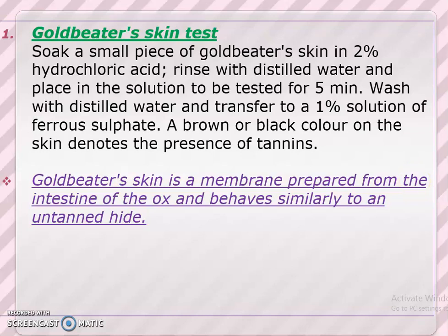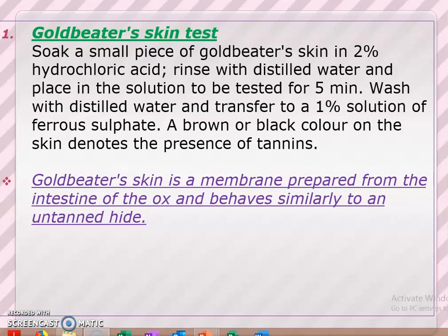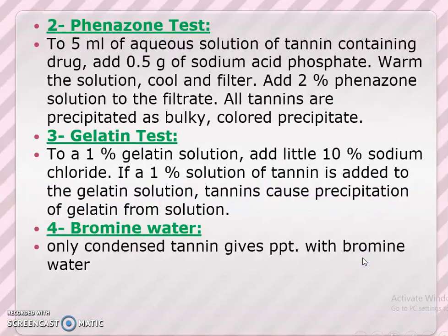Chemical tests used for analysis of tannins: The first is the gold beater's skin test. Soak a small piece of gold beater's skin in 2% hydrochloric acid, rinse with distilled water, and place in the solution to be tested for 5 minutes. Wash with distilled water and transfer to a 1% solution of ferrous sulphate. A brown or black color on the skin denotes the presence of tannins. Gold beater's skin is a membrane prepared from the intestine of ox and behaves similarly to untanned hide. Other tests include the phenazone test, gelatin test, and bromine water test.